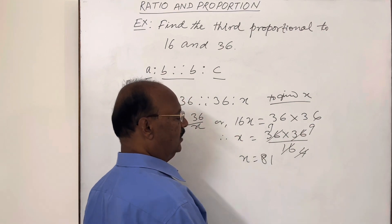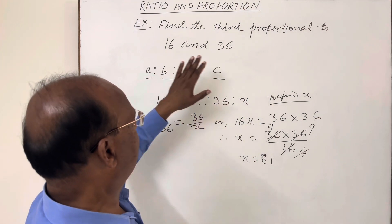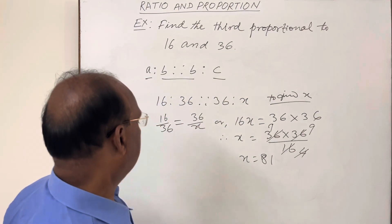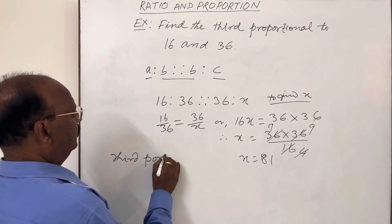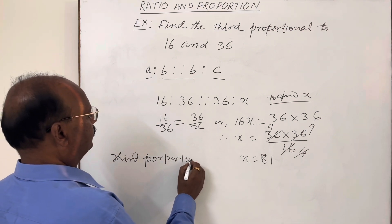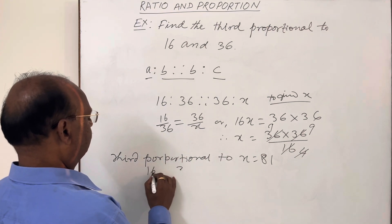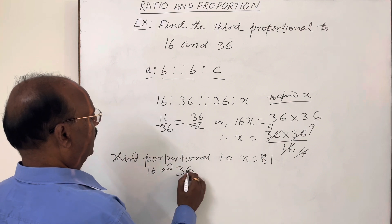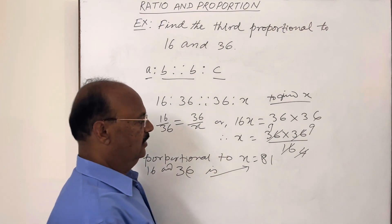that is 81. So this is the answer, the value for third proportional to 16 and 36. Therefore, third proportional to 16 and 36 is 81.